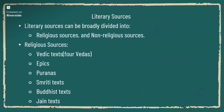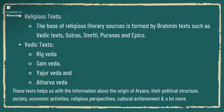The next category is literary sources, divided into two divisions: religious sources and non-religious sources. Religious sources include Vedic texts, epics, Puranas, Smritis, Buddhist texts, and Jain texts. Literary sources are basically formed with Brahmin texts such as Vedas, Vedangas, and Upavedas.